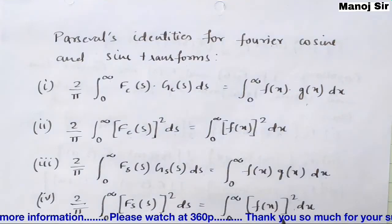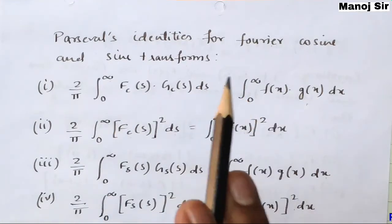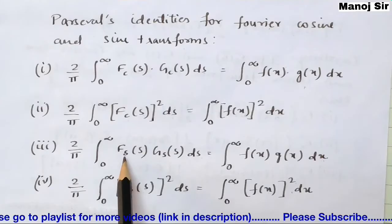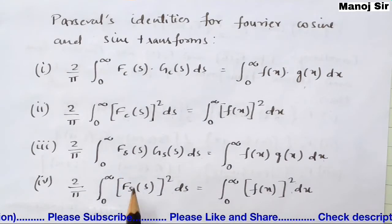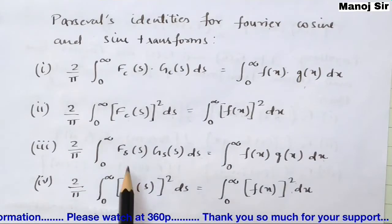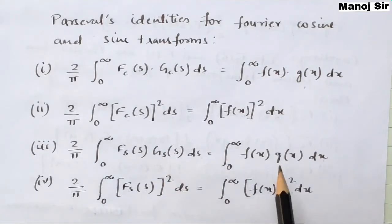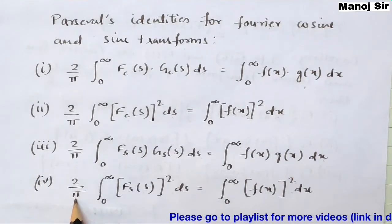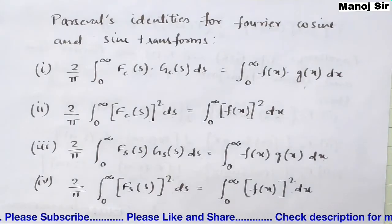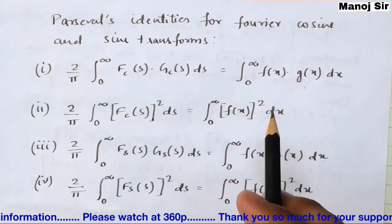For the Fourier sine transform — identified by subscript s — the identities are: (2/π) ∫₀^∞ Fs(s) · Gs(s) ds = ∫₀^∞ f(x) · g(x) dx, and (2/π) ∫₀^∞ |Fs(s)|² ds = ∫₀^∞ |f(x)|² dx. You need to remember all four Parseval identities — two for Fourier cosine transform and two for Fourier sine transform.